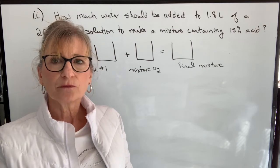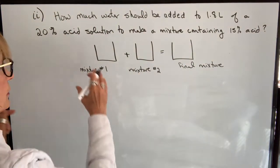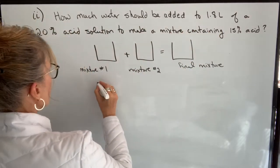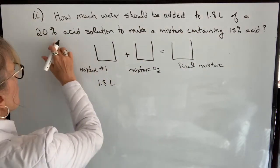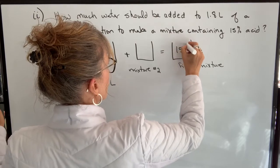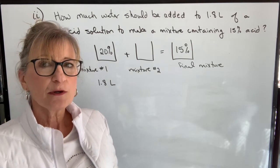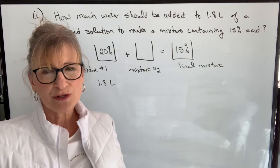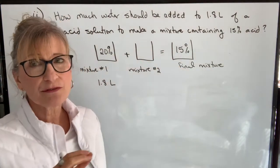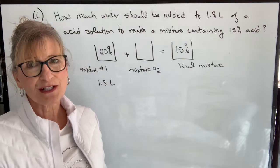Again, we have two mixtures combining to equal a final mixture, so let's get our information into the drawing. We start with 1.8 liters of a 20% solution, and we want to end up with a 15% solution. We want to know how much water to add. This question is unique in that we're adding straight water, and the percentages refer to the amount of acid in the solution.